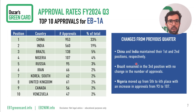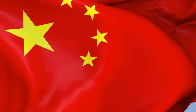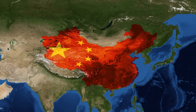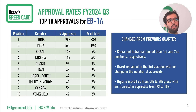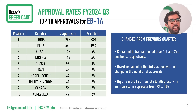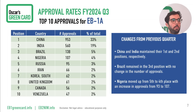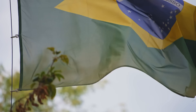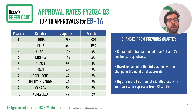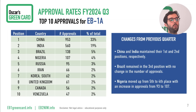Let's talk about specific countries in each category. For EB1A, China and India maintain their first and second positions respectively. China saw a decrease from 1,074 approvals in quarter two to 953 in quarter three — a decrease of about 120 cases. India saw a decrease from 617 to 560 approvals, a decrease of 57 cases. Brazil remained in third position with no change in the number of approvals. Nigeria moved up from fifth to fourth place with an increase in approvals from 93 to 107.